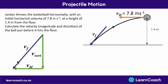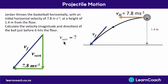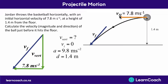The horizontal velocity will not change at all because horizontal velocities have no forces acting on them — no gravity means no change in speed. So the final horizontal velocity is still 7.8 meters per second. Now we need to find the final vertical velocity. Initially, just as the basketball leaves Jordan's hands, there is zero vertical velocity — it's moving across but hasn't started falling yet.